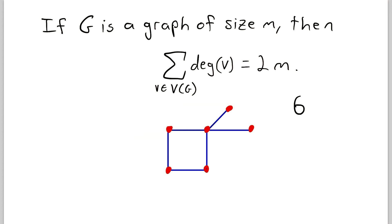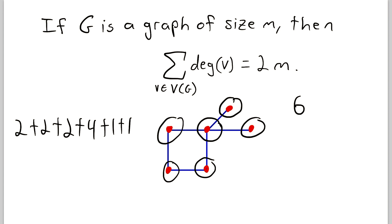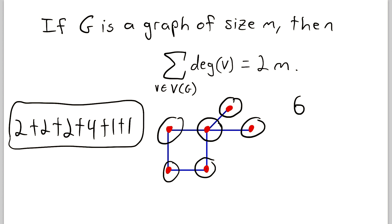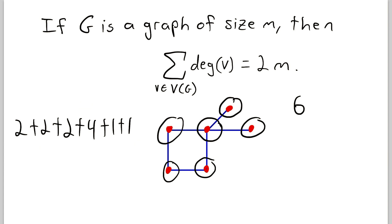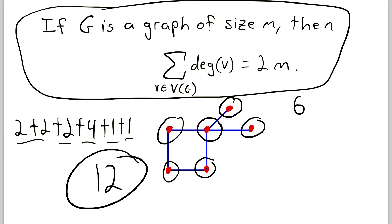So now let's take a look at the degrees of these vertices. The degree of this vertex is 2. The degree of this vertex is also 2. The degree of this vertex is again 2. The degree of this vertex is 4. And the degree of both of these vertices is 1, so that's plus 1 and then plus 1 again. Remember that the degree of a vertex is just the number of edges incident with that vertex. So this is the sum of the degrees of all of our vertices: 2 plus 2 is 4, plus 2 is 6, plus 4 is 10, plus 1 is 11, plus 1 is 12 — which is 2 times 6, just as the first theorem of graph theory tells us it should be.